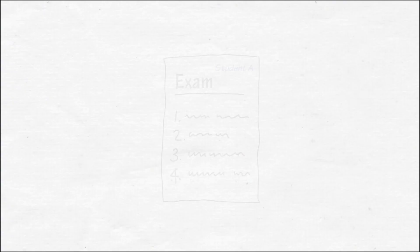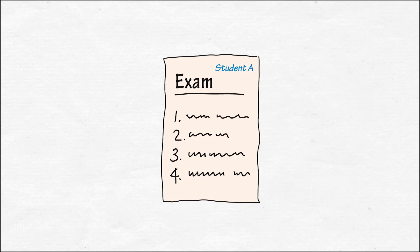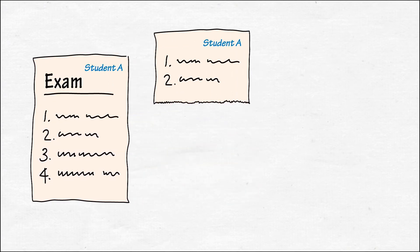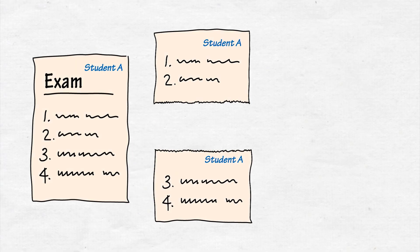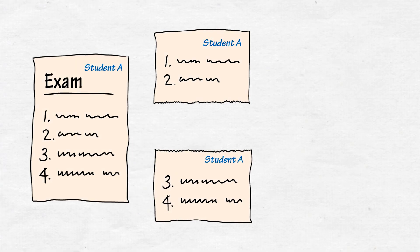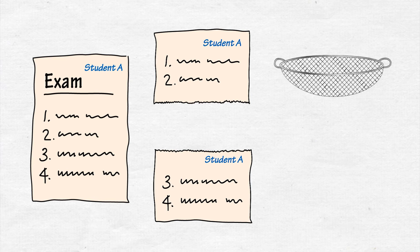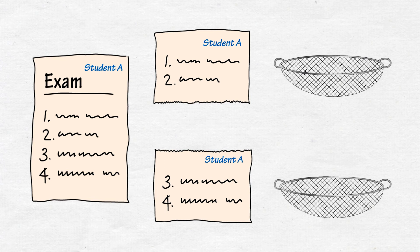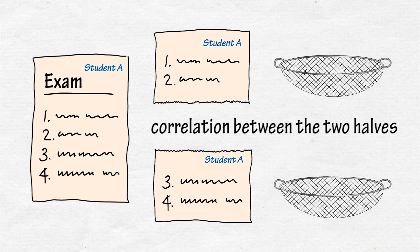In the case of exams, obviously, you cannot determine reliability in this way. So, instead of getting students to retake the exam, you treat it as if it were two exams. After you have marked it, you split the exam up into two halves and consider each half as if it were a separate test. Instead of seeing the exam as one sieve, you have created two sieves, and you can check to what extent the sieves correlate with each other.